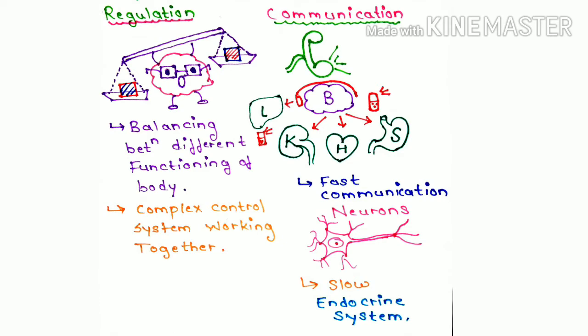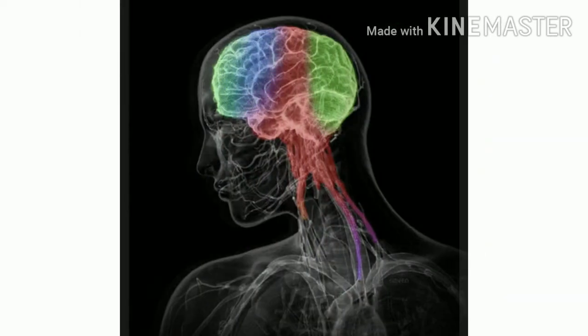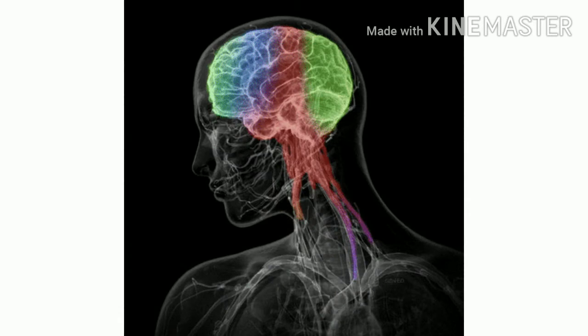Communication can be fast via neurons. Neurons communicate using electrical and chemical signals.